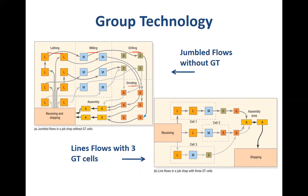By doing so, we can see that the products to be made will flow in a very jumbled way. For some products it has to go from one lading machine to the next lading machine and then to the milling machine and then directly to assembly. For others it might go from a lading machine to the drilling machine and then to assembly. So there might be different types of flow patterns depending on the type of product being made.